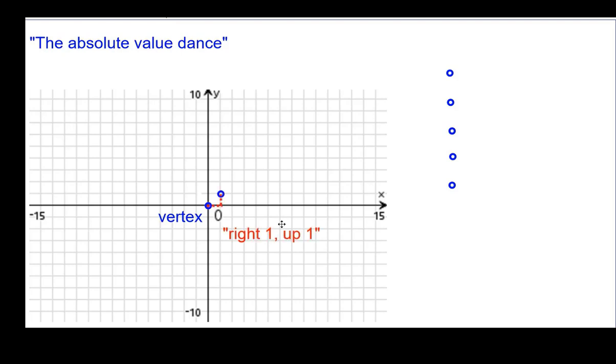Right one, up one. Right two, up two. And right three, up three. And going in the opposite direction, left one, up one. Left two, up two. And left three, up three. Because the absolute value of negative numbers is the opposite, the positive number.